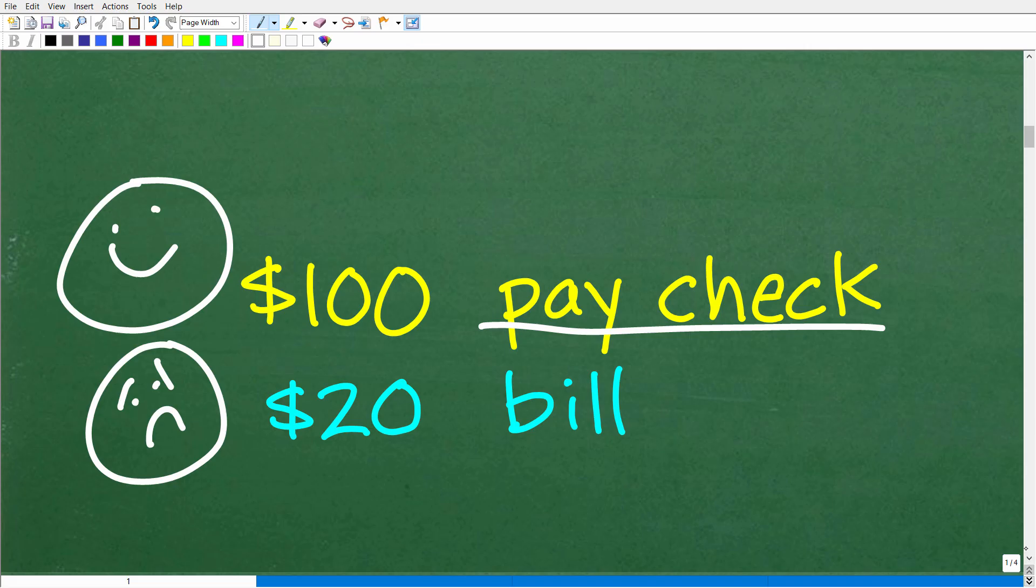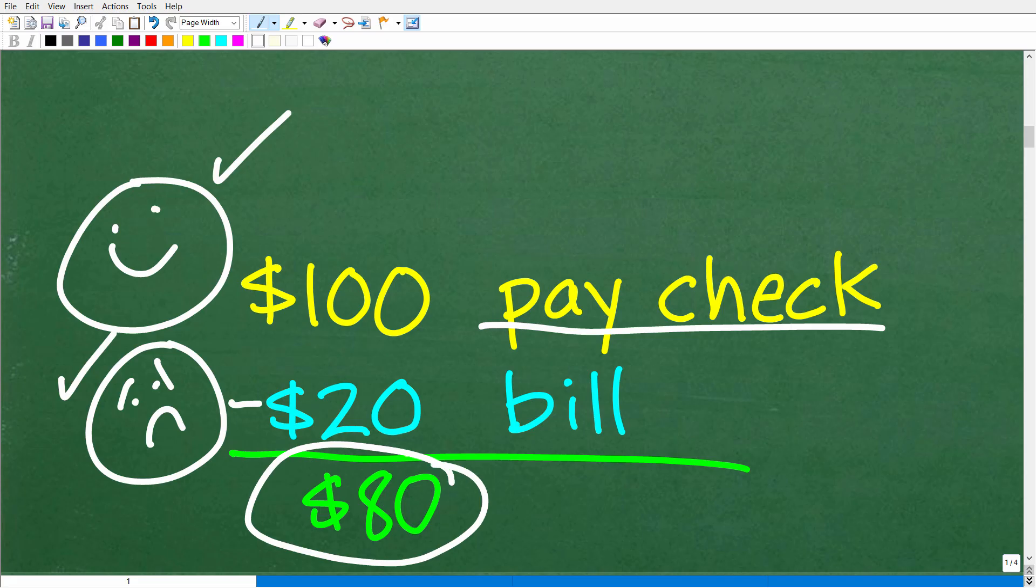So if you have $100, right, and we're happy about this, but now we owe $20, what is your true financial status or your financial situation? Well, really, what you have here is $80, right? So what we have to do is subtract away this $20 bill from the amount of money that we have, and we're left over with $80.